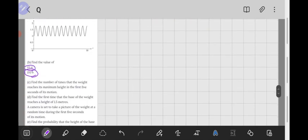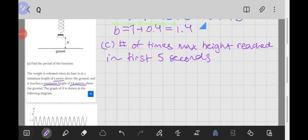Now for question c. We want the number of times the max height is reached in the first five seconds. So there are several different ways that we can do this.